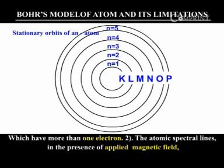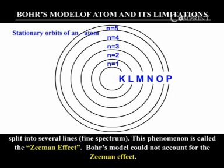The atomic spectra lines in the presence of applied magnetic field split into several lines. This phenomenon is called Zeeman effect. Bohr's model could not account for the Zeeman effect.